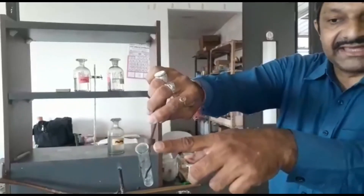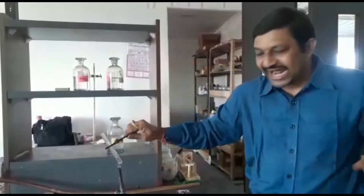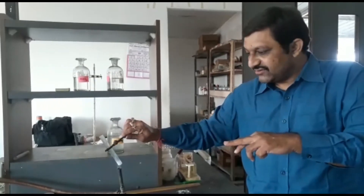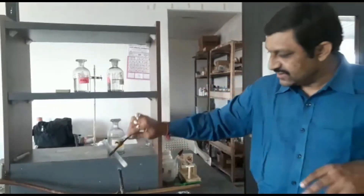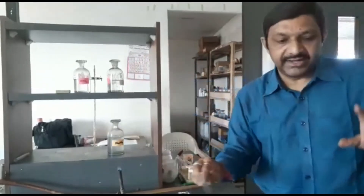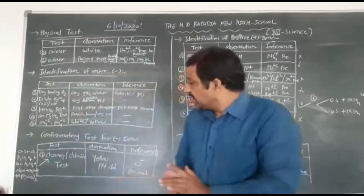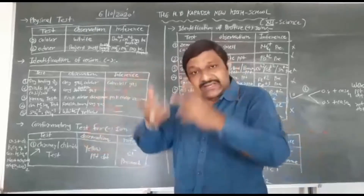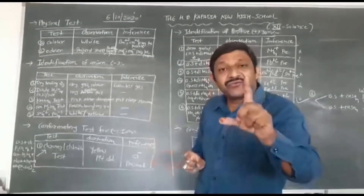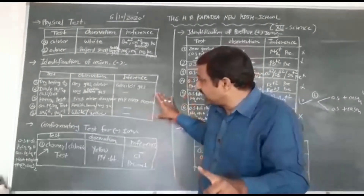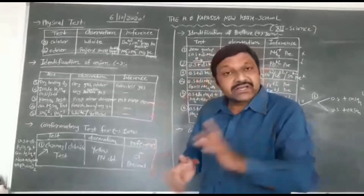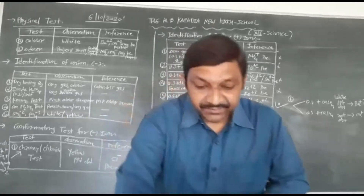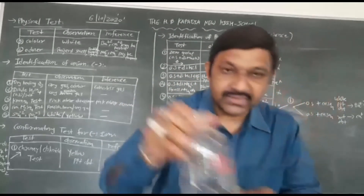In the dry heating test, white gas is obtained. You can deduce Cl⁻ is here because white gas is observed. Now after the dry heating test, you perform the dilute sulfuric acid test — no red or brown gas is obtained. But particularly, the KMnO₄ test is very important because Cl⁻ is present here. So we now perform the KMnO₄ test. Here is your original solution plus dilute sulfuric acid.